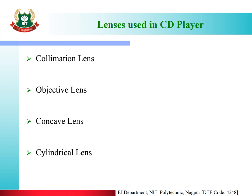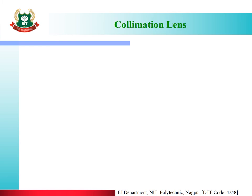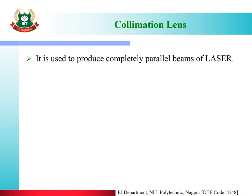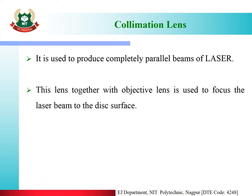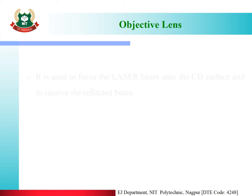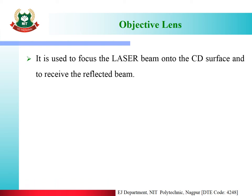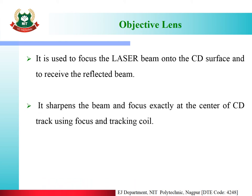The collimation lens is used to produce completely parallel beams of laser, and together with the objective lens, is used to focus the laser beam onto the disk surface. The objective lens is used to focus the laser beam onto the CD surface, receive the reflected beam, sharpen the beam, and focus it exactly at the center of the CD track.